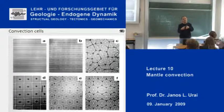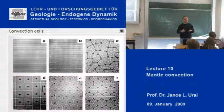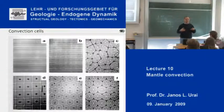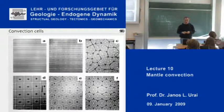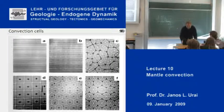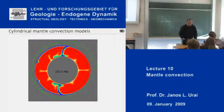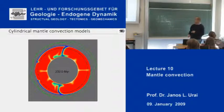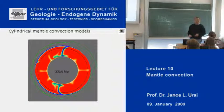So regular convection cells in the Earth's mantle are very difficult to imagine because there are just too many heterogeneities. And also, the Earth is, of course, a sphere. So if we want to model convection, we will have to take into account the spherical nature of the Earth.